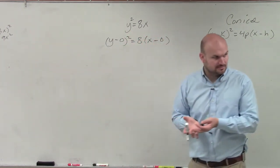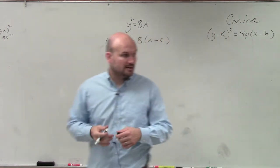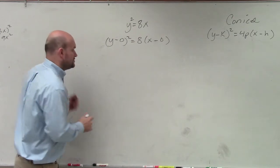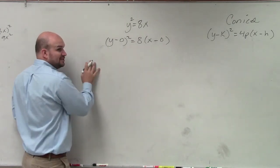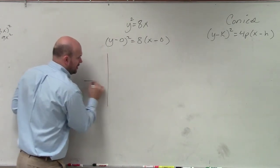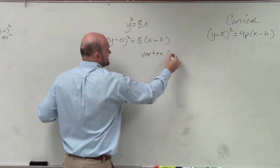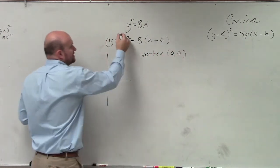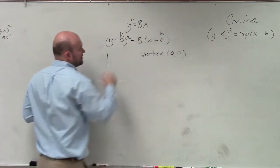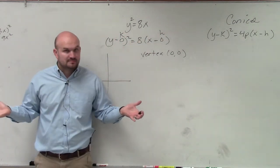Would everybody kind of agree with me? Yes? I haven't gotten to that yet. So if we're trying to graph this, what we can identify is the vertex is at 0 comma 0, because that is your k and that's your h. Would everybody agree with me on that? That would be right.